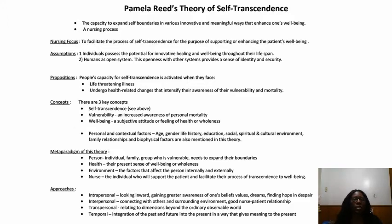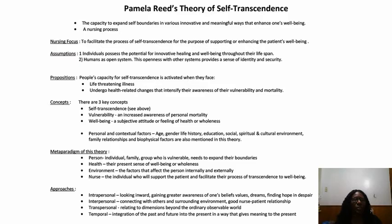There are three concepts. The first is self-transcendence. The next is vulnerability, which is an increased sense of personal mortality. And well-being, which is a subjective attitude or feeling of health or wholeness. The personal or contextual factors associated with this theory include the age of the person, their gender, their education, their social and spiritual backgrounds, their family relationships, and other biophysical factors.